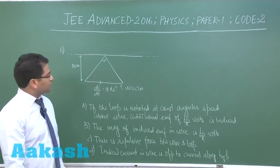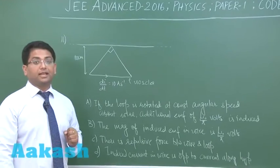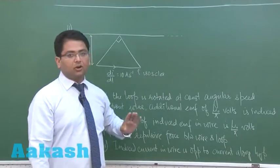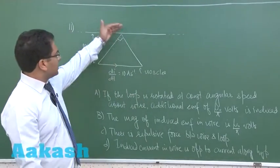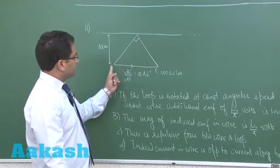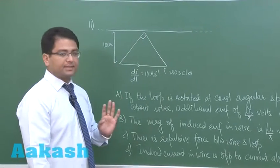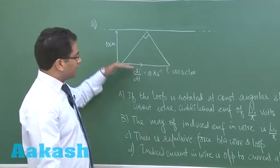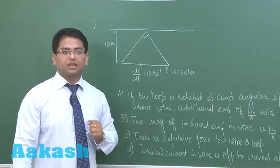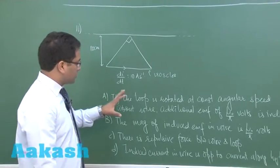Question number 11 is drawn from electromagnetic induction. There is an infinitely long wire immediately below, with no electrical contact, and a triangular right-angle isosceles loop. The current in the loop is anticlockwise and increasing at a rate of 10 amperes per second.